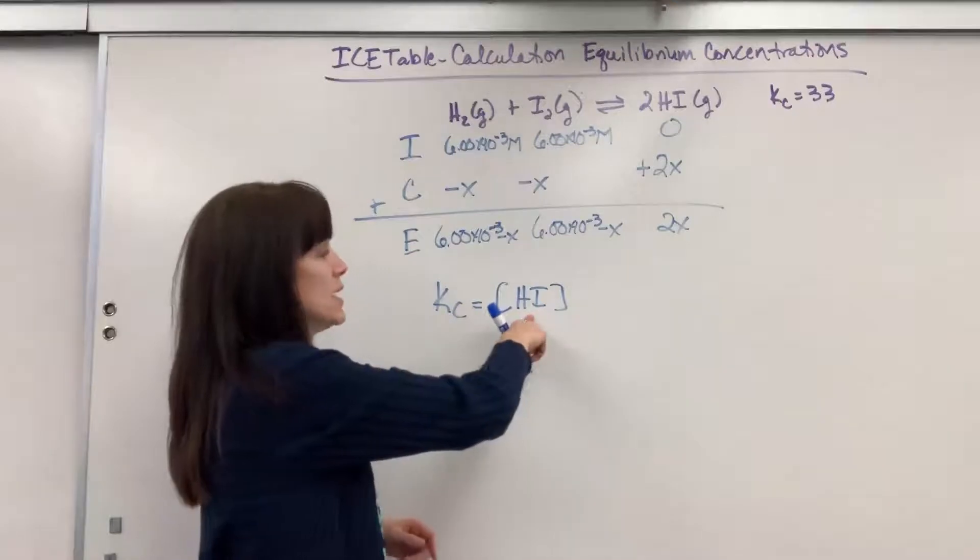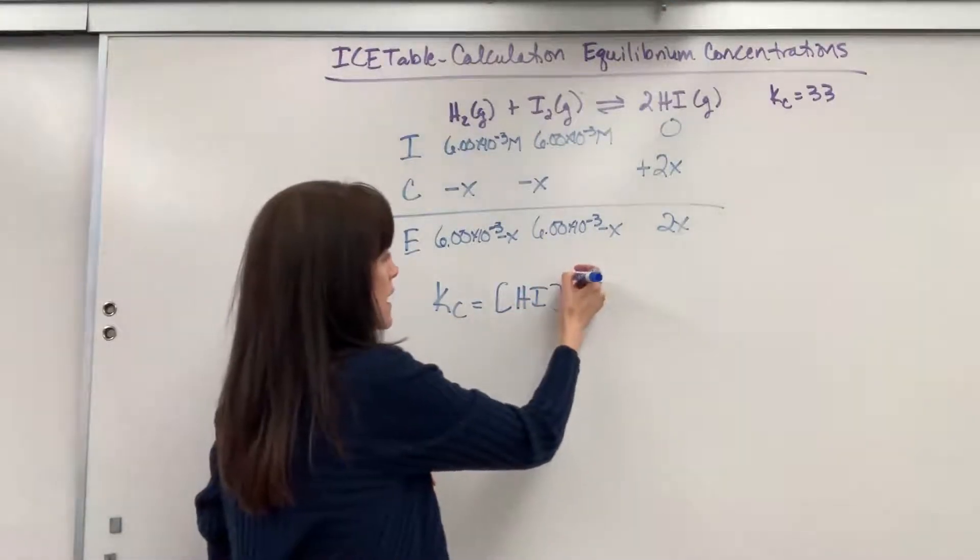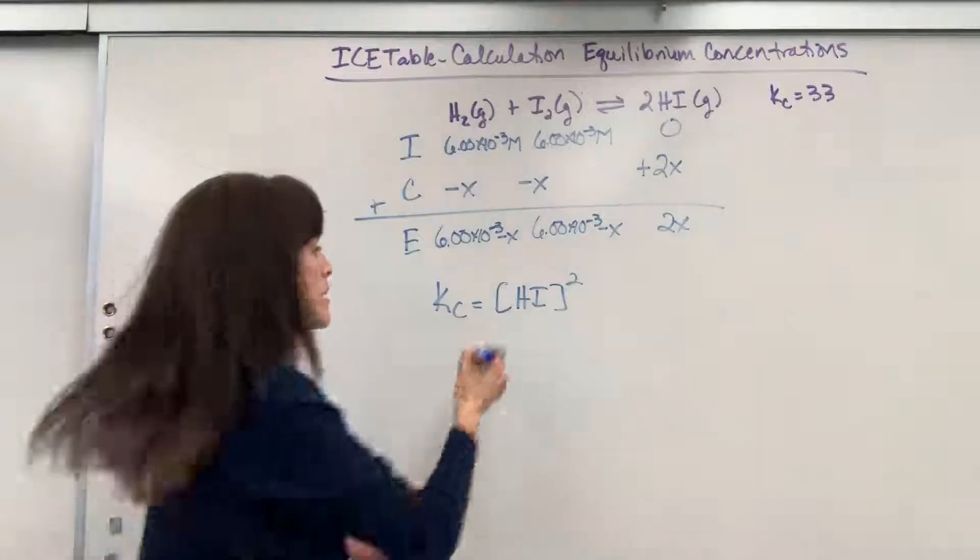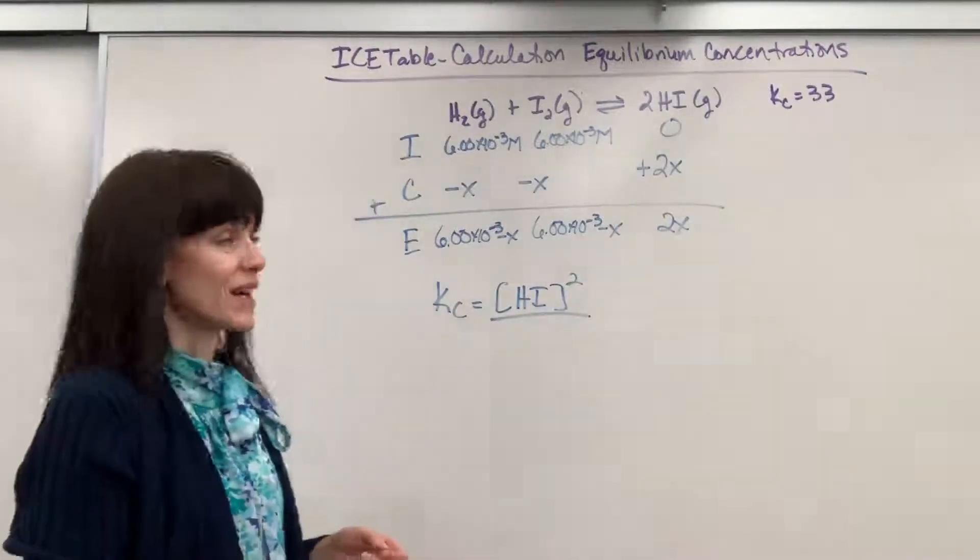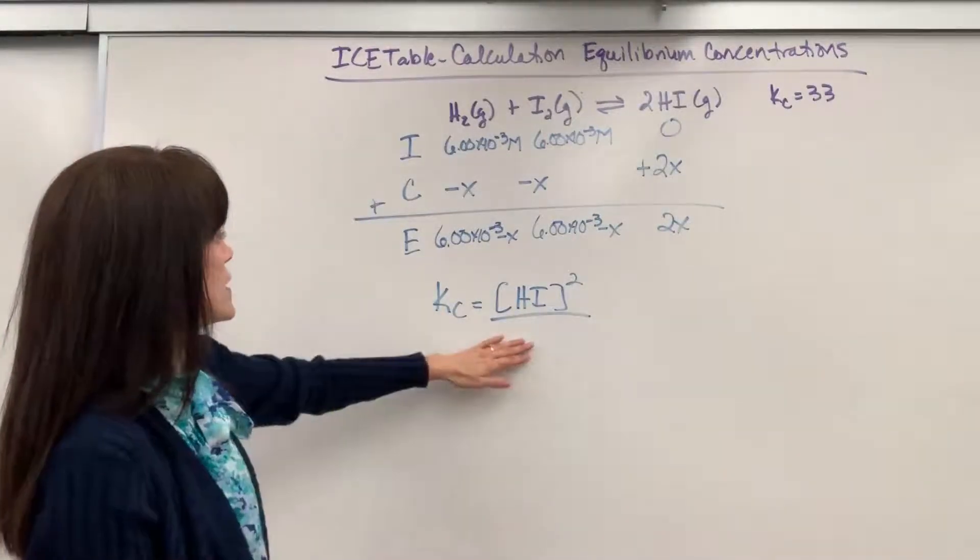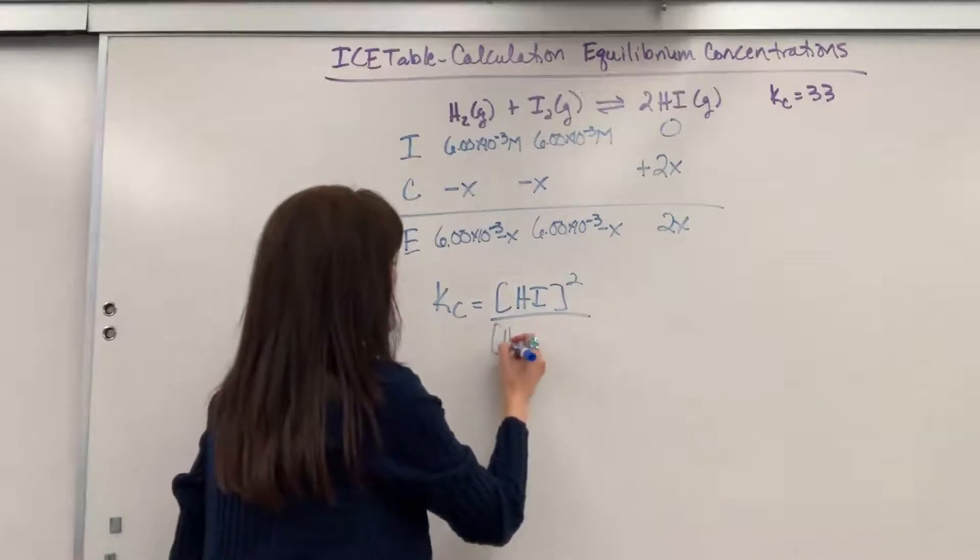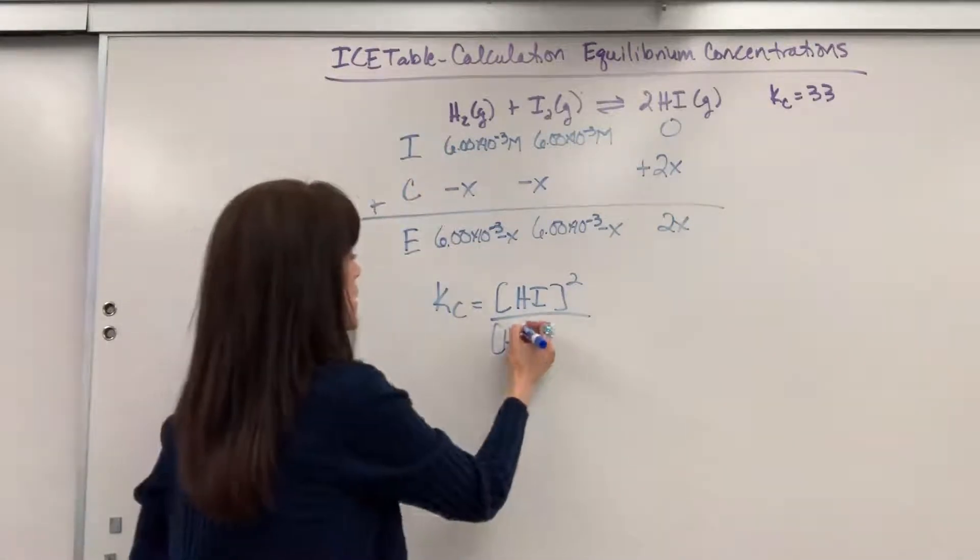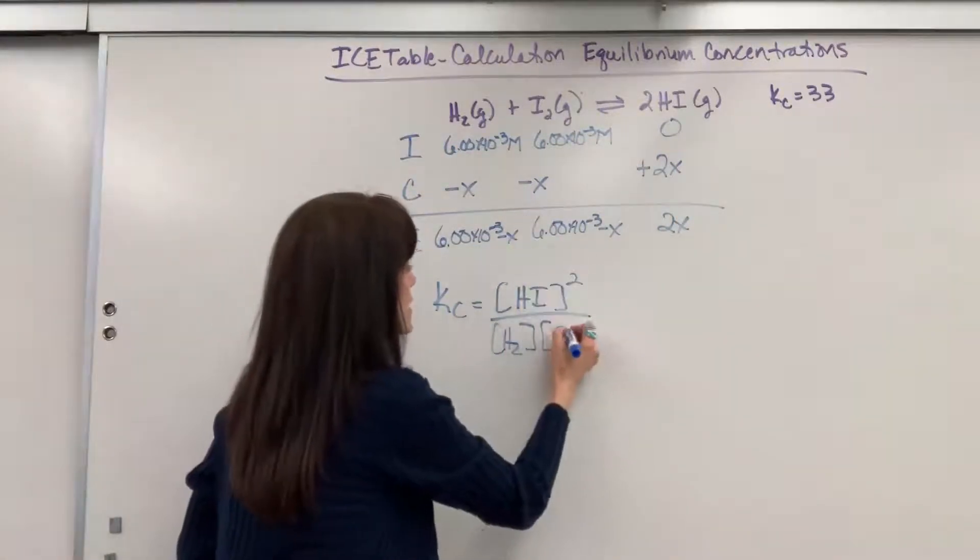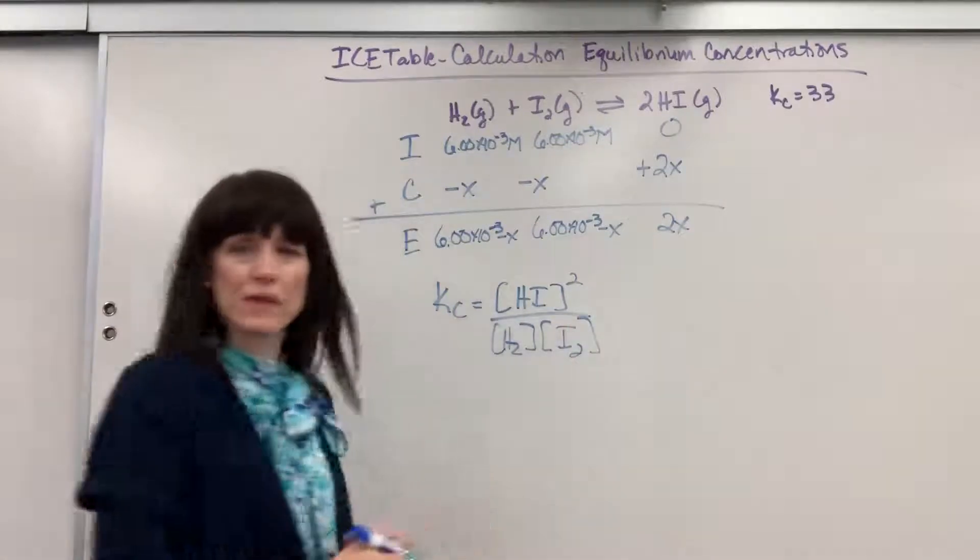You have to take the coefficient and that is the exponent. So this will be product, the hydrogen iodide gas that's going to be squared. Hydrogen iodide. And then here we're going to have the hydrogen that's to the first power times the iodine, which is also to the first power. Okay,